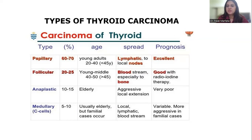Follicular carcinoma has good prognosis with radioiodine therapy. The third type is anaplastic, which is 10 to 15% common, found in the elderly. It has aggressive local extension and the prognosis is very poor. The fourth type is medullary, which arises from C cells, is only 5 to 10% common, found in the elderly, but familial cases can occur. It has local lymphatic spread or spread by bloodstream. Prognosis is variable, but it is more aggressive in familial cases.